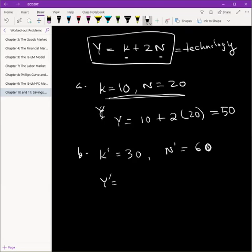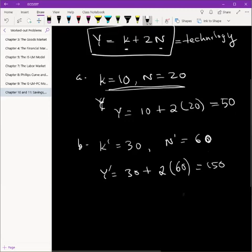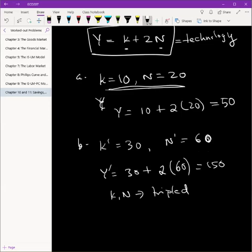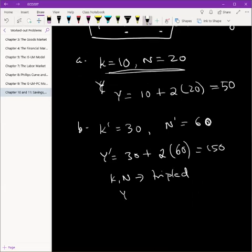So Y prime will be how much? 30 plus same equation, two times N which is 60, so 150. So now look at what happened. Our resources, K and N, tripled. And as a result, our output Y has also tripled.